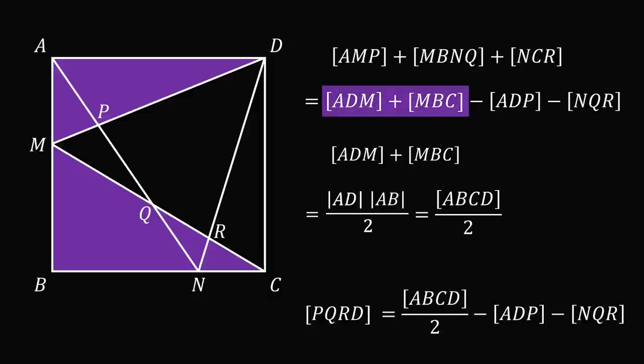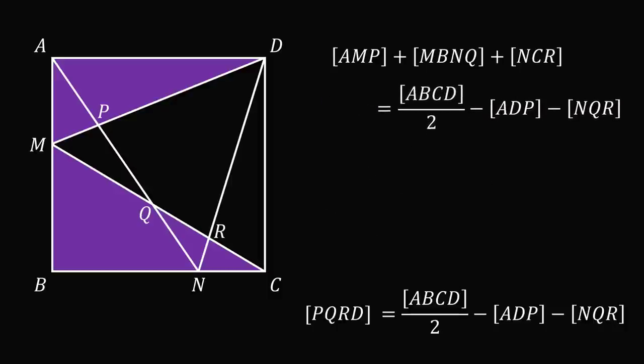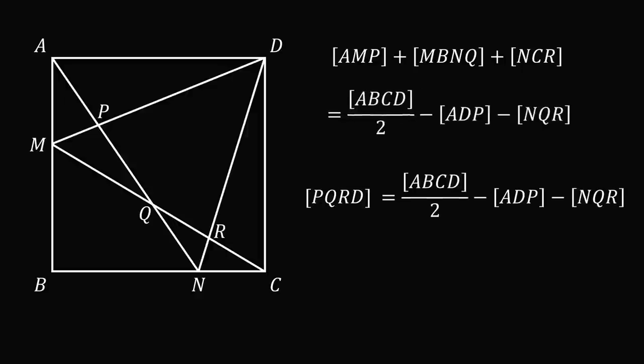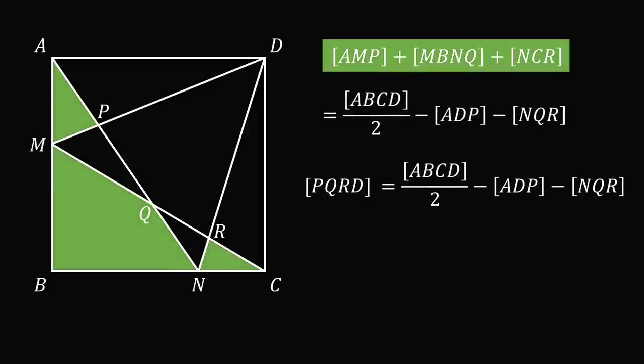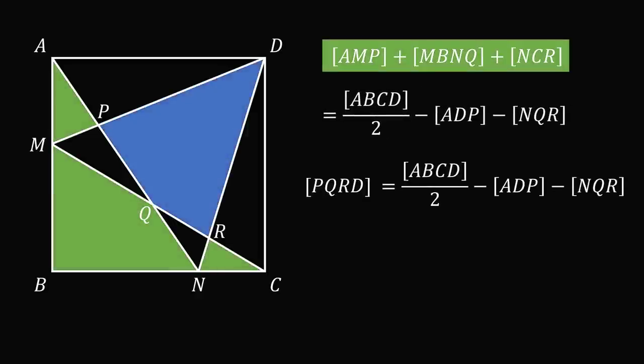So we'll substitute that in for the areas of ADM plus MBC. We now have equations for the areas that are shaded in green—that's the first equation—and the area that's shaded in blue.